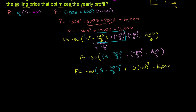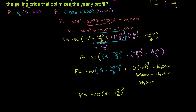Now we can simplify. (-70)² = 4,900, times 10 = 49,000. Then 49,000 minus 16,000 equals 33,000. So the profit function simplifies to: profit = -30(s - 70/3)² + 33,000.